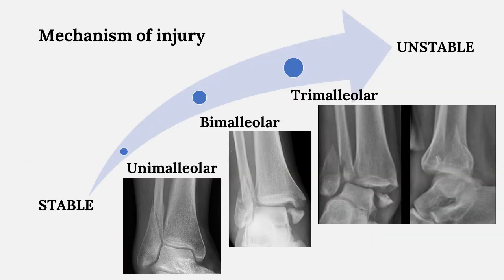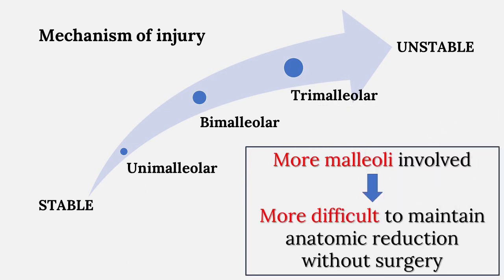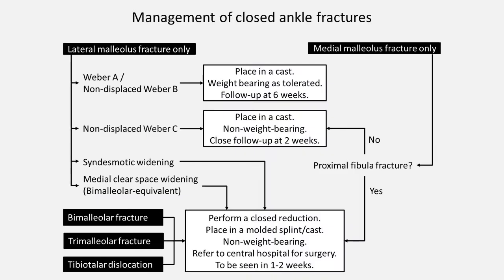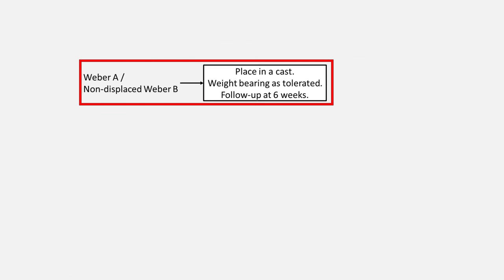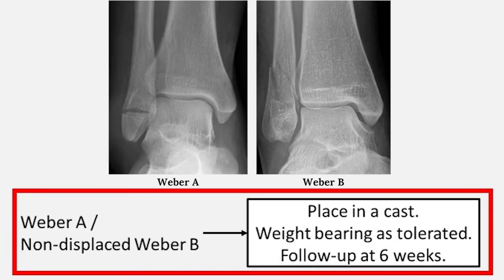Stability is based on the number of malleoli that are fractured as well as associated ligamentous injury. The more malleoli that are fractured, the more difficult it is to maintain anatomic alignment without surgery. Looking at the treatment algorithm, Weber A fractures or non-displaced Weber B fractures can be treated in a cast; patients can be allowed to weight bear as tolerated immediately and should be followed up in four to six weeks.